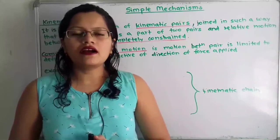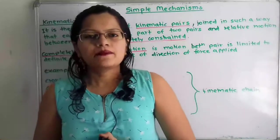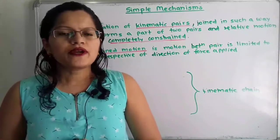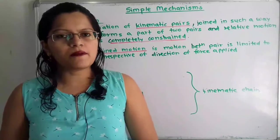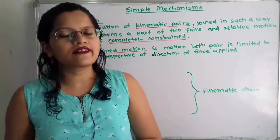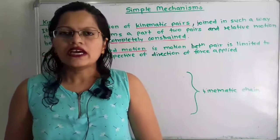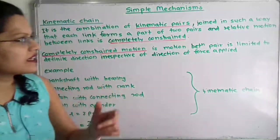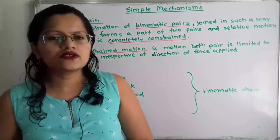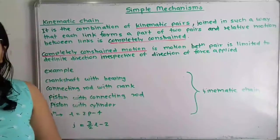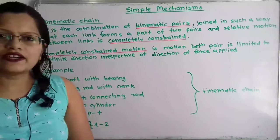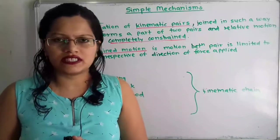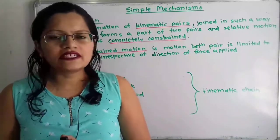Hello friends, this is Priyanka. Today we are going to understand basic concepts for the kinematic chain in the chapter on simple mechanisms. We are going to understand this concept with the help of diagrams and solve some problems related to this. A kinematic chain is the combination of kinematic pairs joined in such a way that each link forms a part of two pairs, and relative motion between links is completely constrained or successfully constrained.